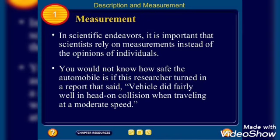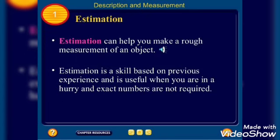In scientific endeavors, it is important that scientists rely on measurements instead of opinions of individuals. You would not know how safe the automobile is if this researcher turned in a report that said vehicle did fairly well in head-on collision when travelling at a moderate speed. So we need to know the exact measurements in certain cases. When we are talking in general terms, he is a bit taller, he is a bit shorter, these can go. But when we are dealing with vehicles or some machines, then exact measurements are needed.